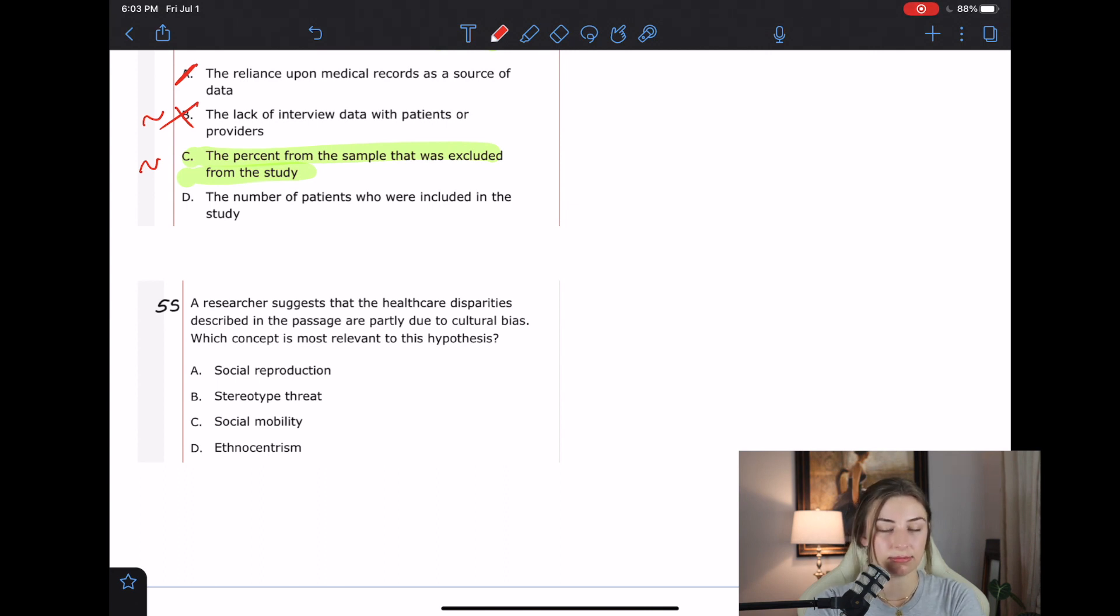D says ethnocentrism. Actually, that's the best one. Ethnocentrism is when we look at other people's cultures through a lens of our own culture, rather than kind of considering that their culture views what they're doing as completely different essentially. So that can definitely be related to bias. And that's our best answer here by far.